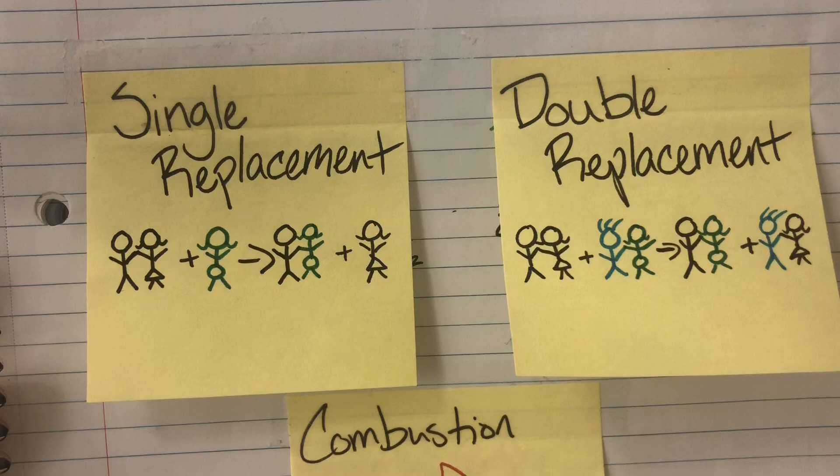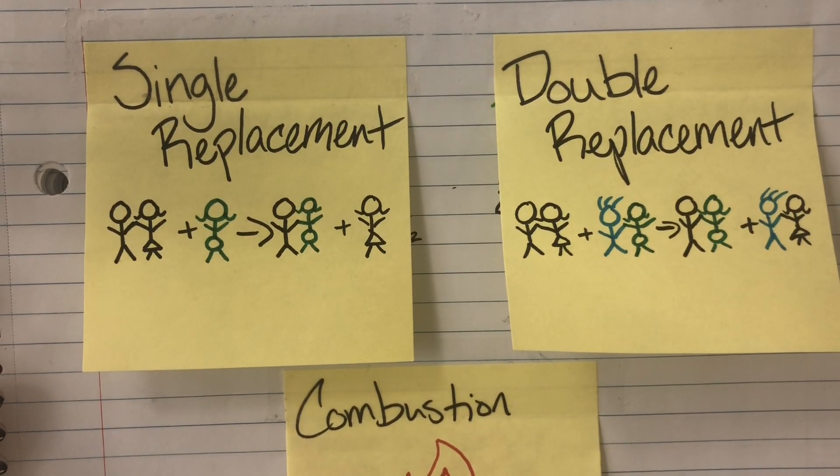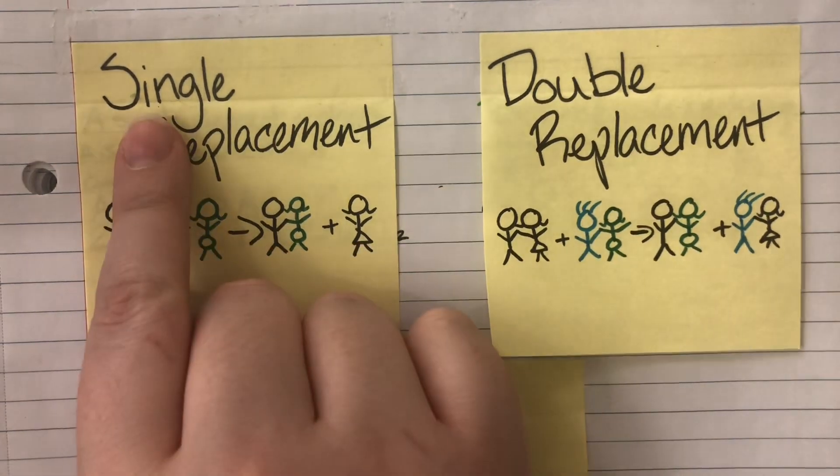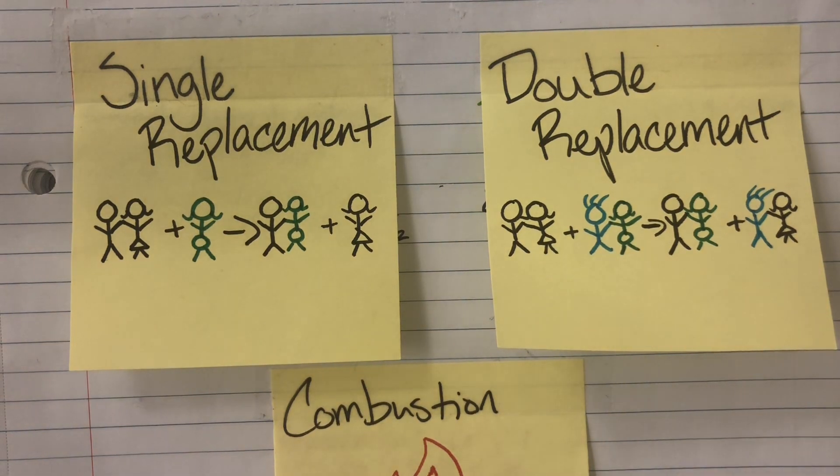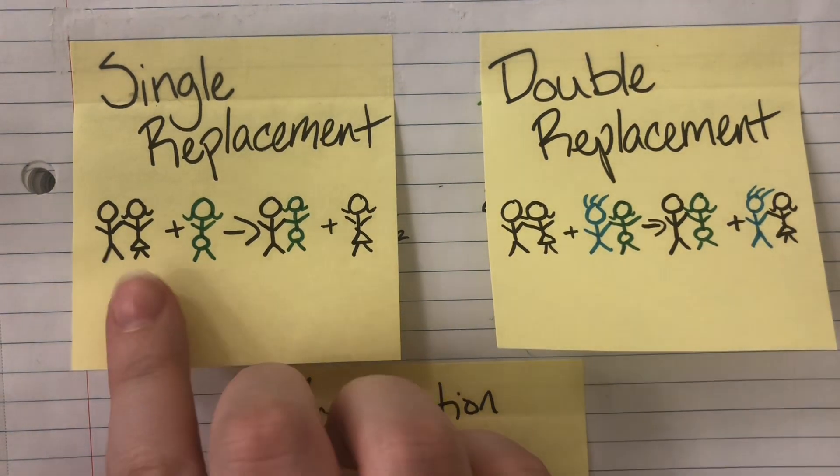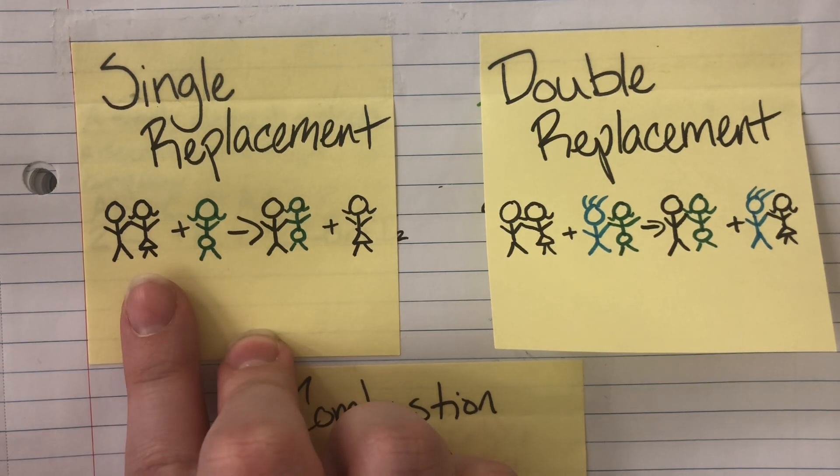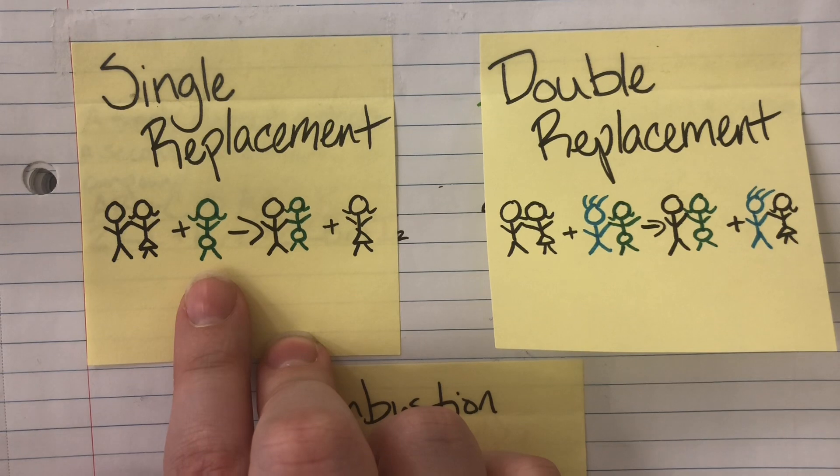The next type of reaction that we're going to talk about is going to be that of single and double replacement. Single replacement I'm always going to have a single element on each side of my reaction. So here you can see bald boy and triangle skirt girl are back together until circle skirt girl comes into the picture.